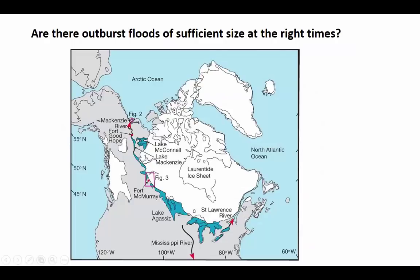Many scientists have looked for these flood events. We know that as the Laurentide ice sheet was retreating, a bunch of glacial lakes were forming right up against the edge of that ice sheet. And we know that as the ice continued to retreat, these lakes occasionally catastrophically drained, dumping fresh water into the North Atlantic, or perhaps dumping fresh water straight into the Arctic Ocean.